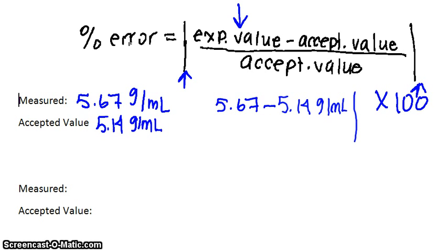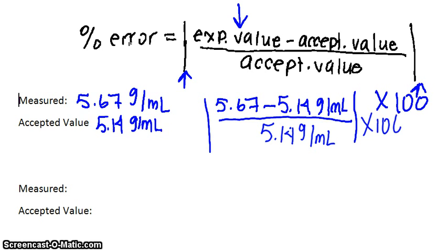We want all this in absolute value, but we're going to get a positive when we subtract these anyway, so that doesn't really matter. We're going to divide it all by the accepted value, which is 5.14 grams per milliliter, and to get the percentage, we're going to times it by 100. The answer to this is a 10.3 percent error.